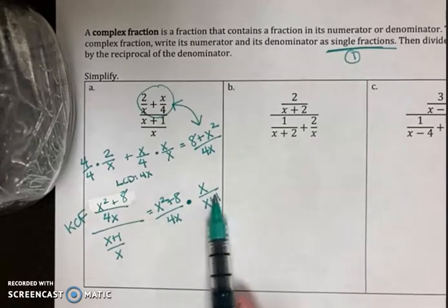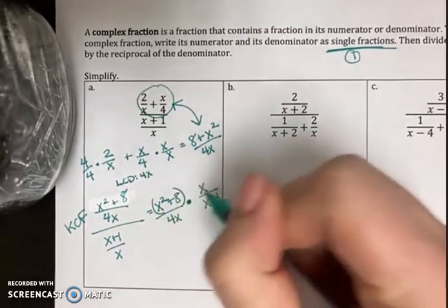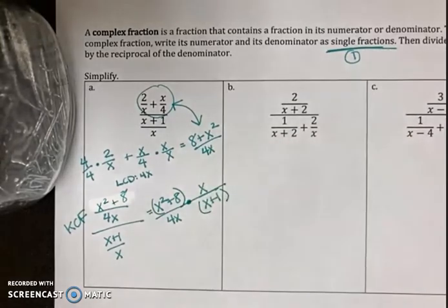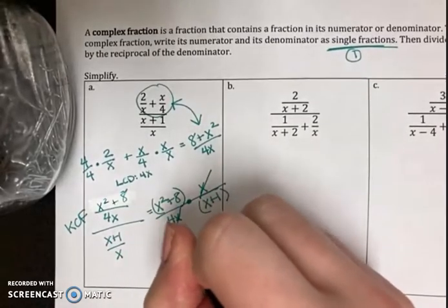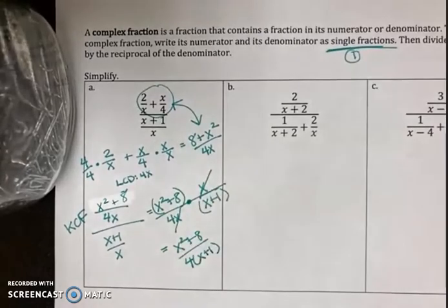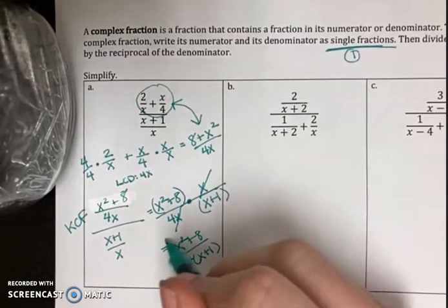When we multiply, we go across the top and across the bottom. So really, I have this times x all over 4x times x plus 1. I just put my expressions in parentheses to remind me they belong together. And hopefully you notice that the x's do cancel. So I'm left with x squared plus 8 over 4 times x plus 1. You can check and see if this simplifies further, but it doesn't. So I'm just left with this as my final answer.